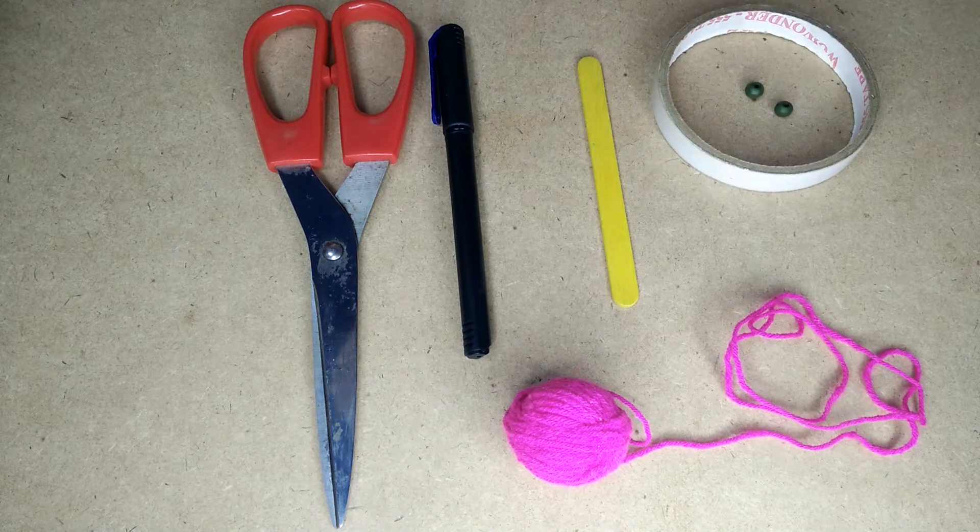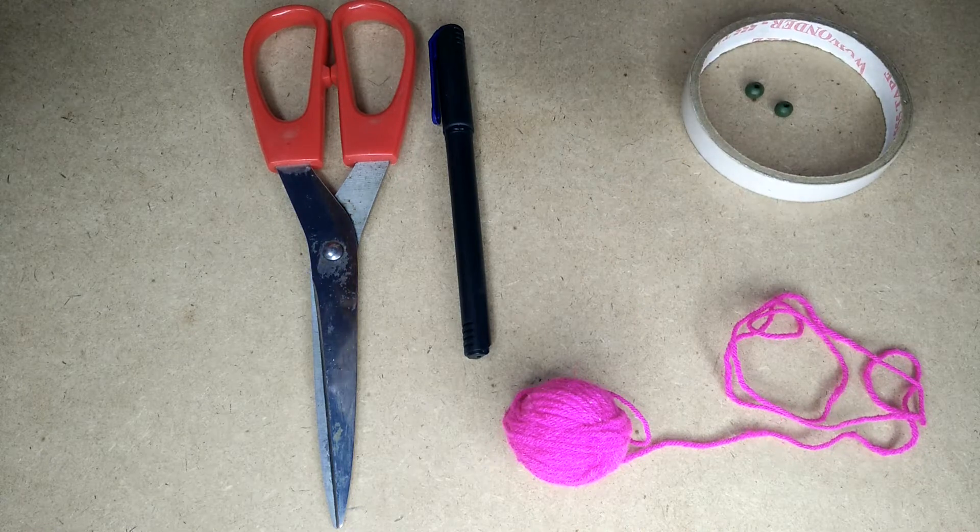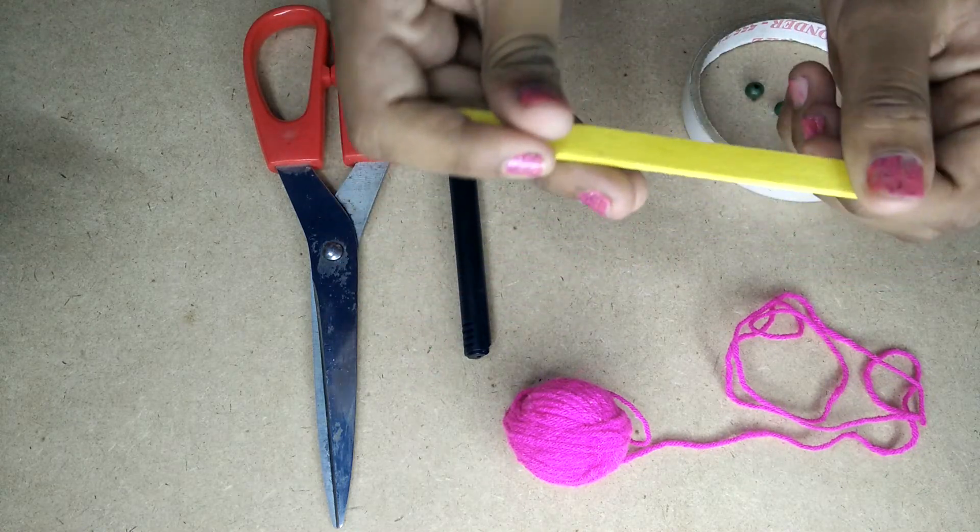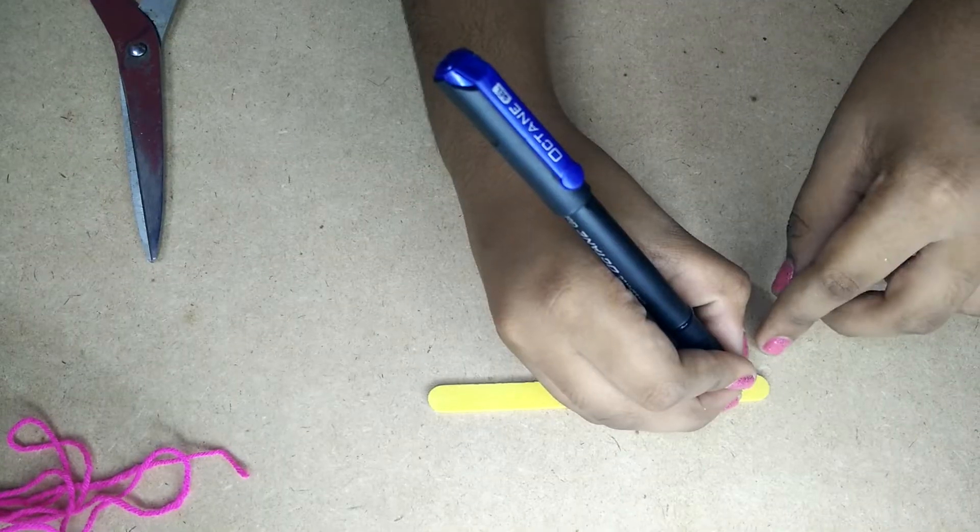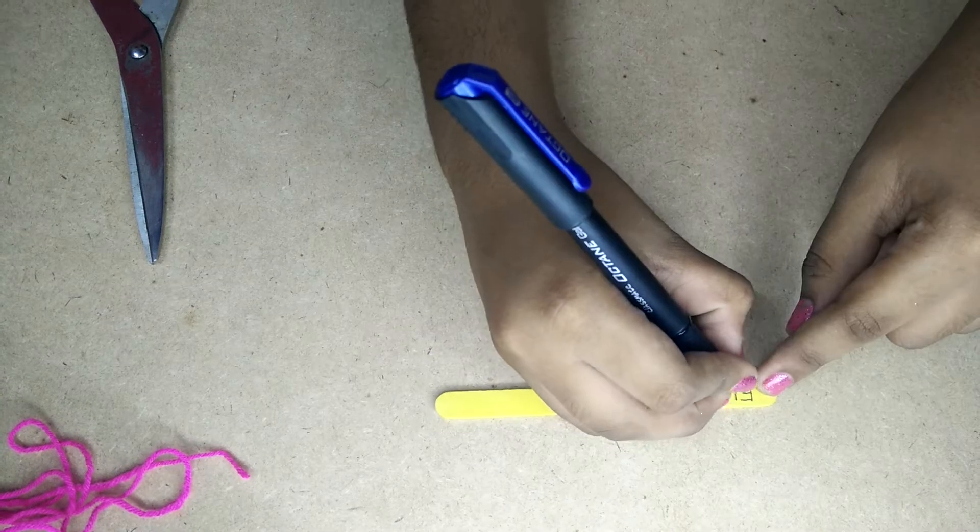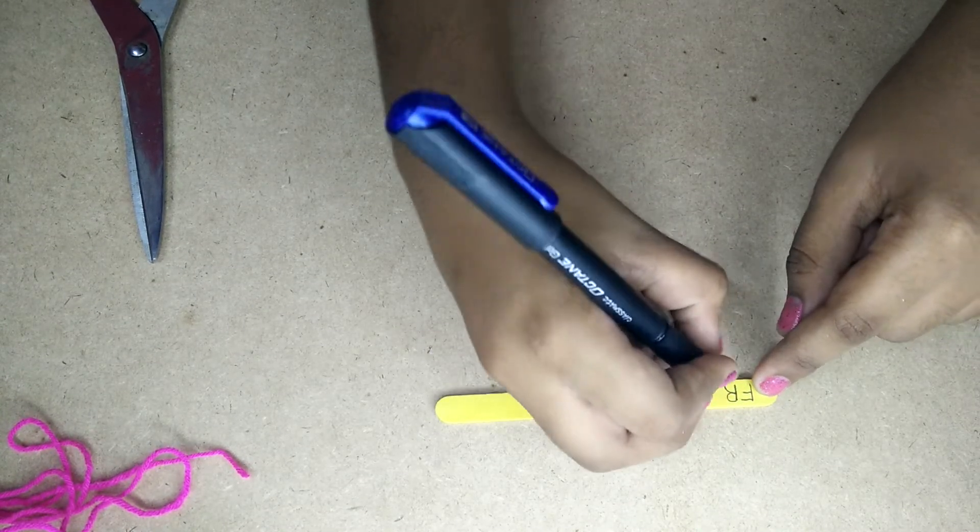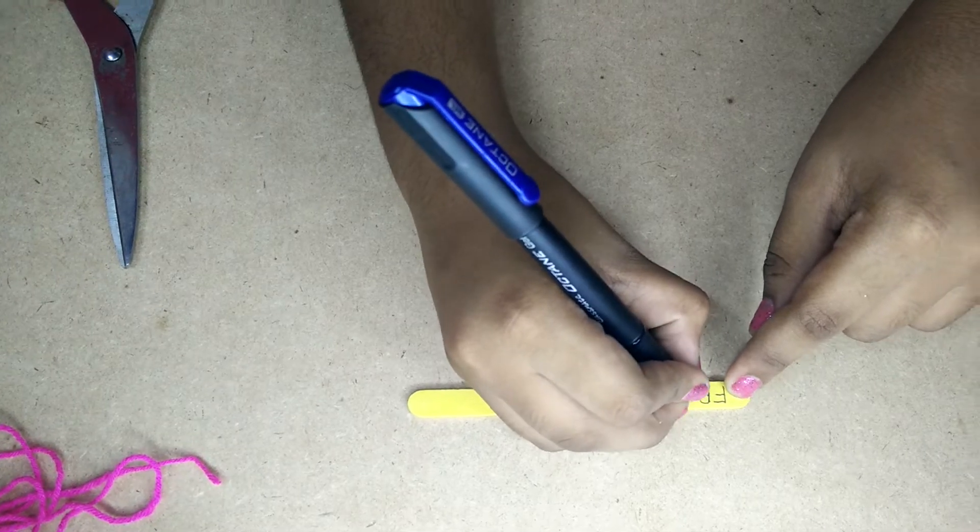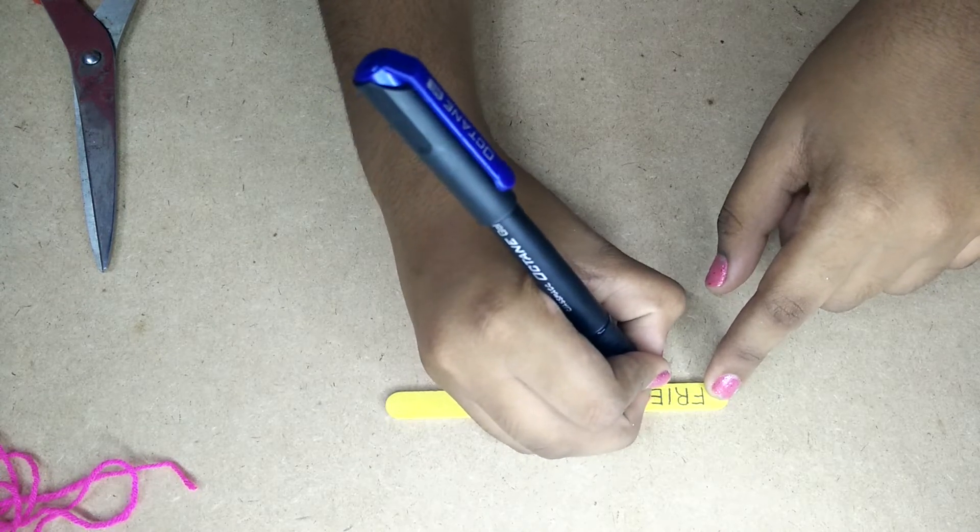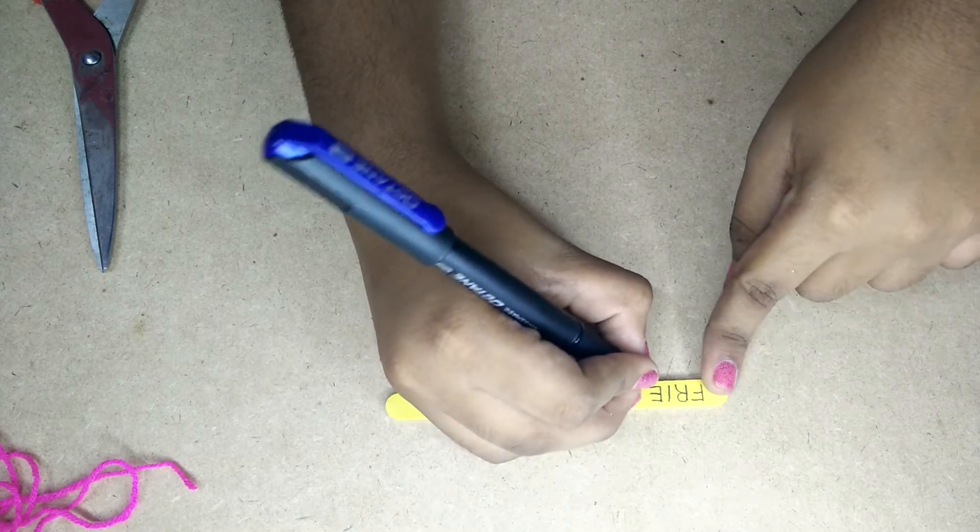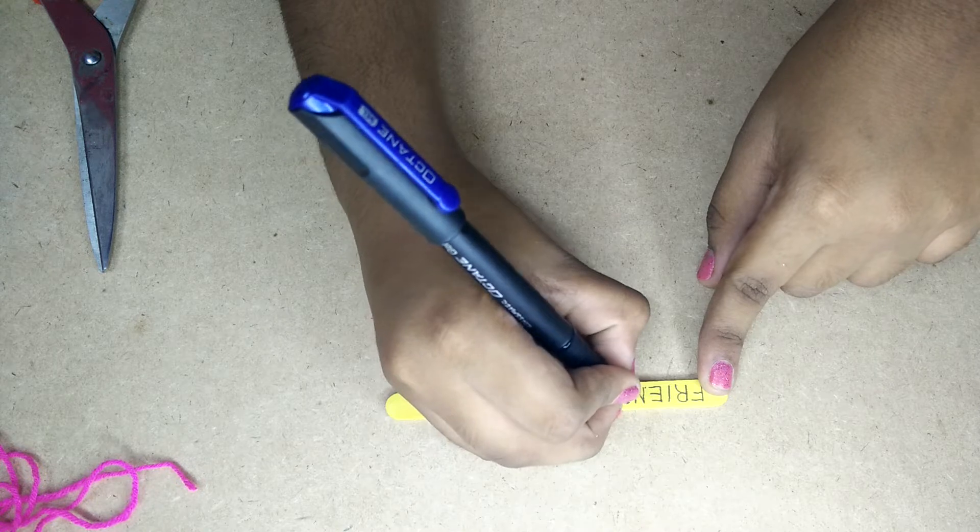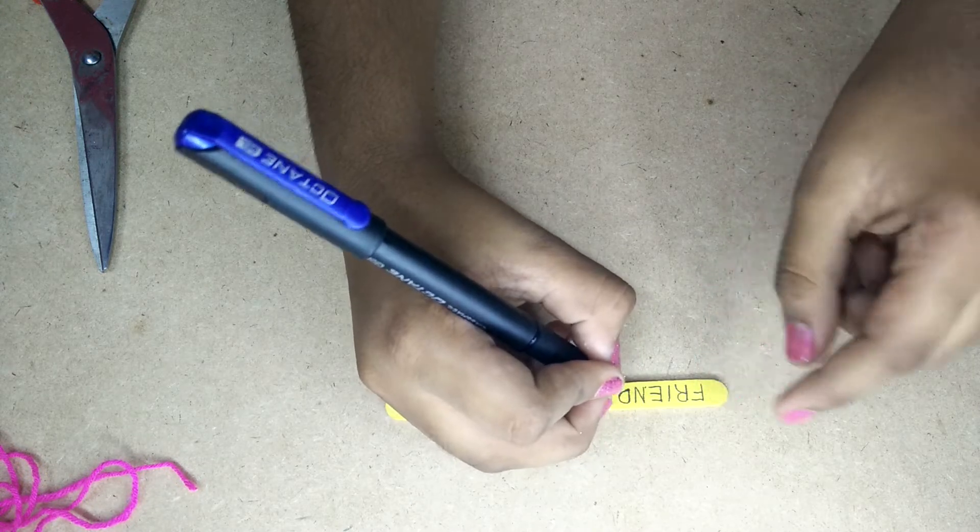So let's get started. First, you have to take the popsicle stick and write friendship near the edge, leaving one finger space. Just like this.